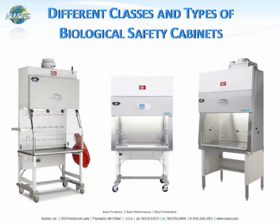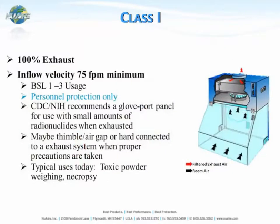There are different classes and types of biological safety cabinets. The Class I biological safety cabinet is designed as 100% total exhaust. The inflow velocity through the front access opening is at 75 feet per minute. This cabinet pulls in room air directly through the work access opening, over the work surface, and it is exhausted either back into the room or to the outside through an exhaust system at the top of the cabinet.